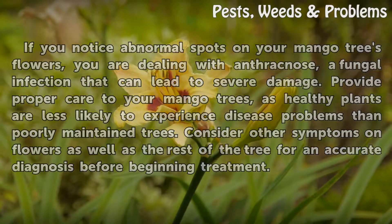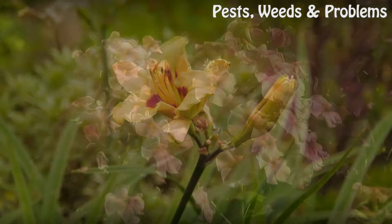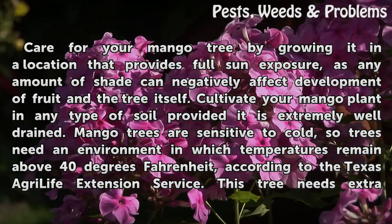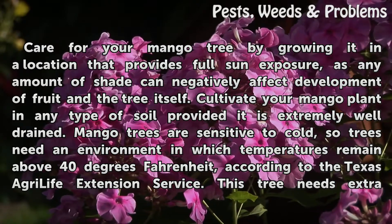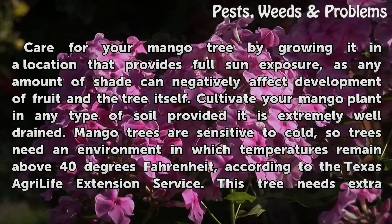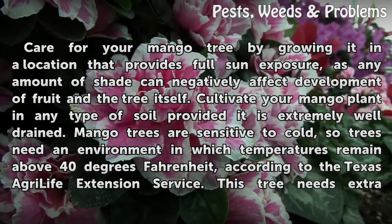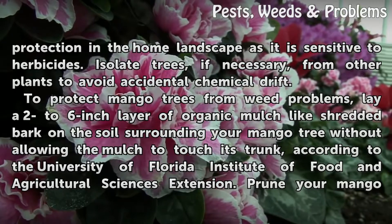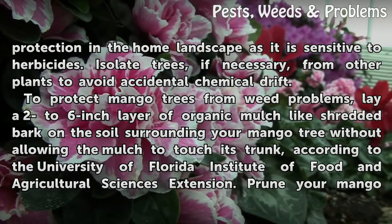For preventive care, grow your mango tree in a location that provides full sun exposure, as any amount of shade can negatively affect development of fruit and the tree itself. Cultivate your mango plant in any type of soil, provided it is extremely well-drained. Mango trees are sensitive to cold, so trees need an environment in which temperatures remain above 40 degrees Fahrenheit, according to the Texas AgriLife Extension Service.